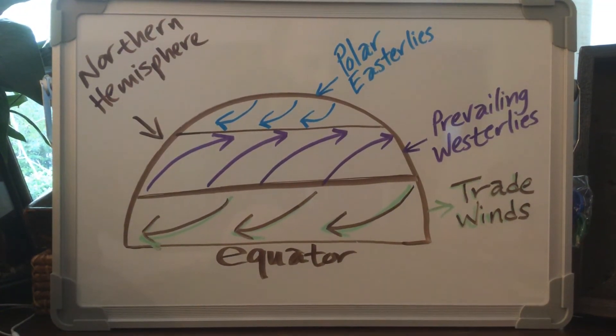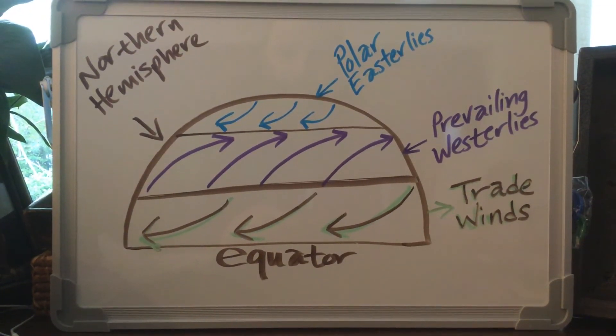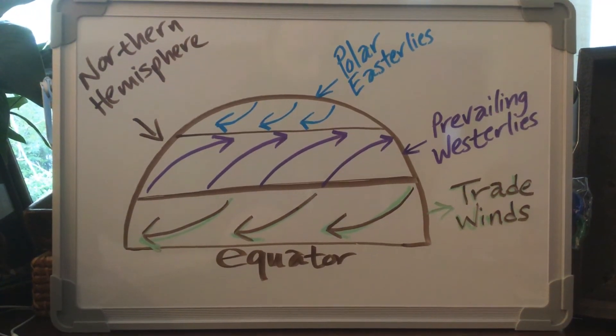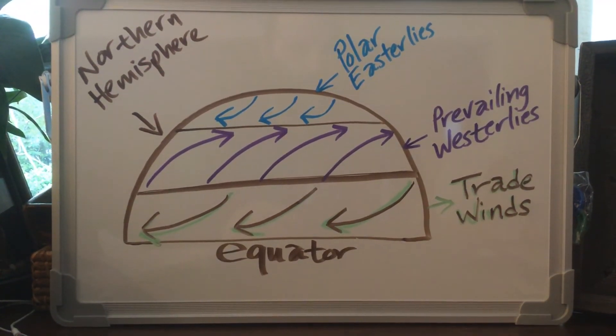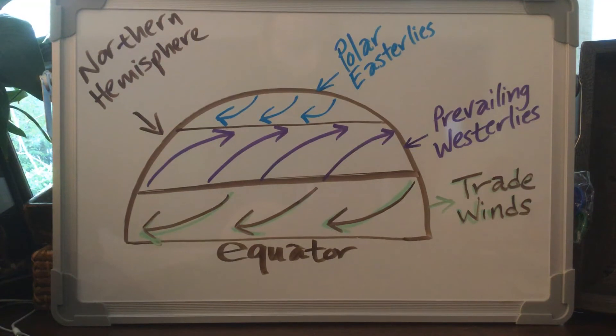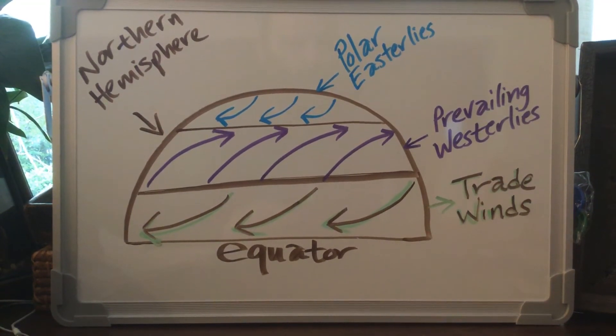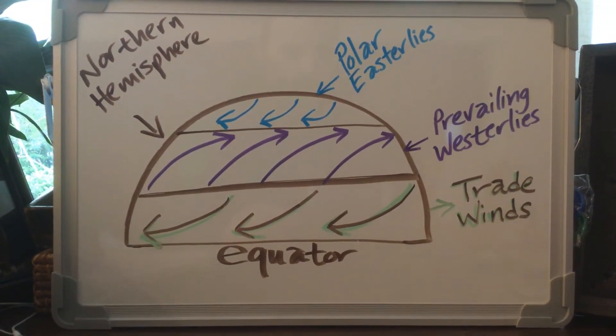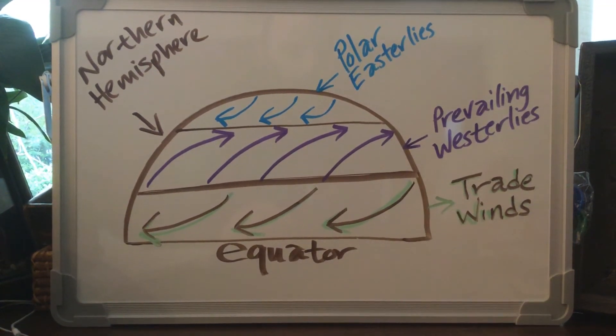The middle one, the prevailing westerlies, are a westerly wind because they blow from the west towards the east. Now these three winds all have certain characteristics to them. Since the trade winds are down there near the equator, well what kind of wind do you think they're going to be? You know the equator is really hot. It's a very wet, humid place.